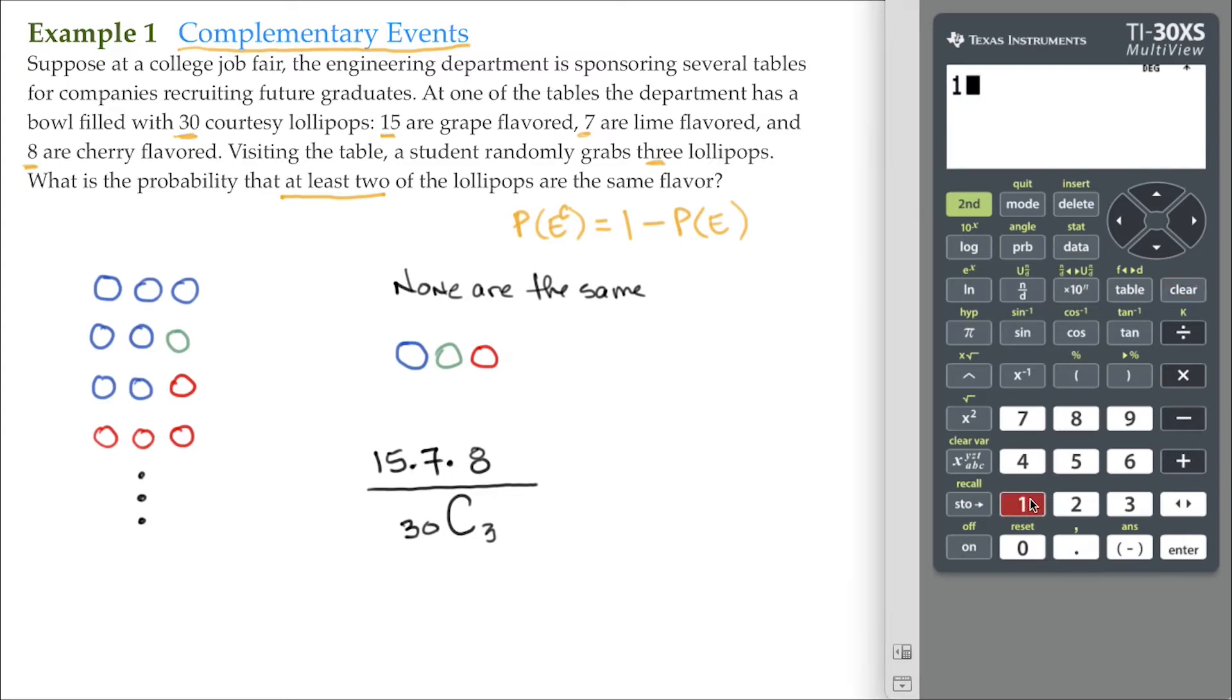So then, of course, on our calculator, I'll do 15 times seven times eight. Eight hundred and forty. I'll go ahead and then divide by 30 choose three. That's 30. Use our probability key. Choose three. And hit enter.